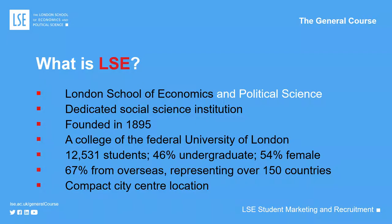The University of London is a very large federal organization with tens of thousands of students — we're just a small part of that. To be precise, 12,531 students were with us last year: 46% were undergraduates, which is what you will be if you come to the school. A striking statistic: 67% of our students last year joined us from outside the UK, from over 150 different countries, speaking over 100 different languages. It is a truly global, cosmopolitan, very diverse campus.